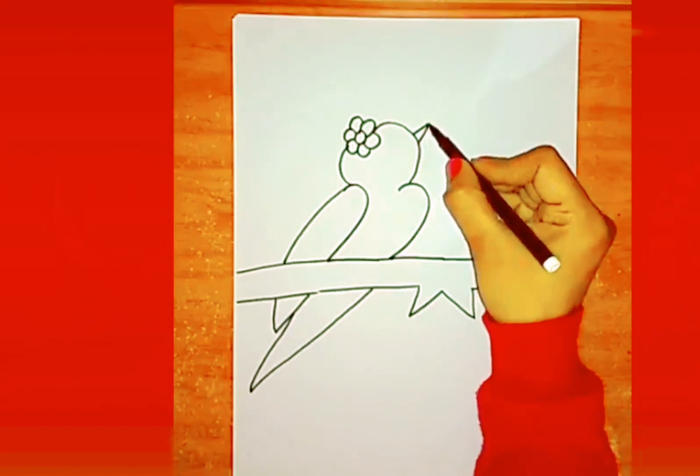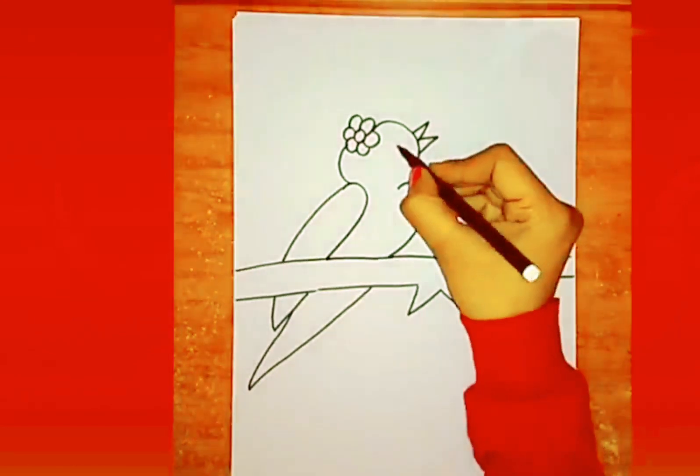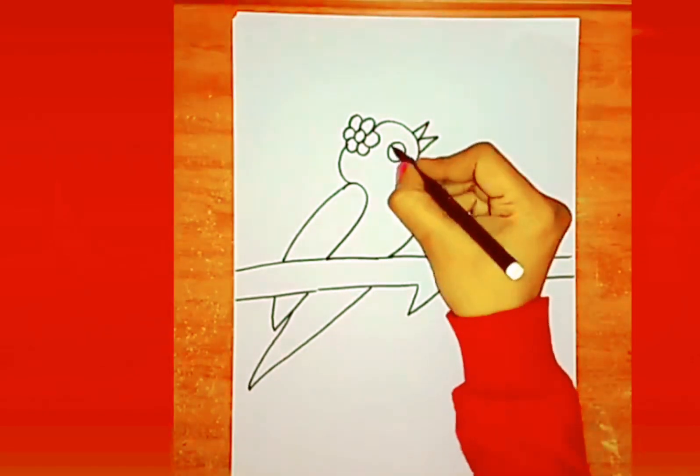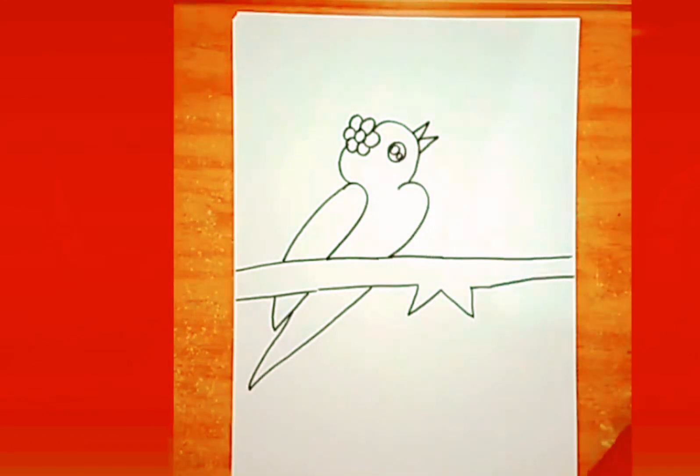Now draw the beak of the bird. Now draw a big circle to make its beautiful eyes. Draw 2 smaller circles to give extra detailing.